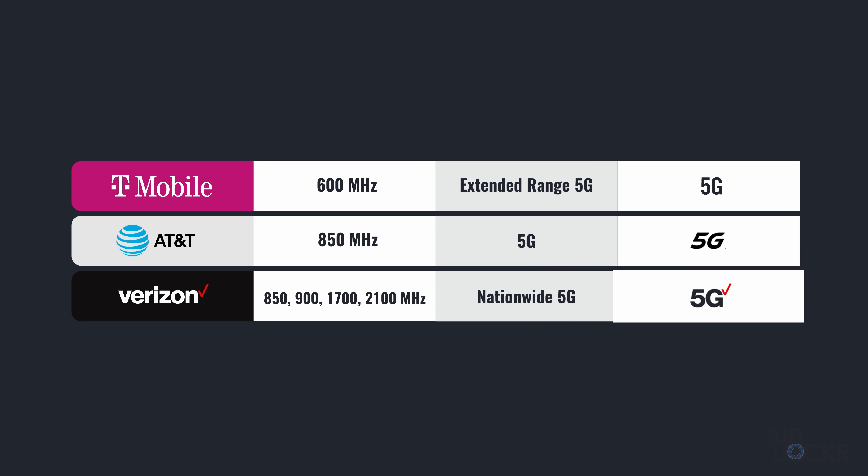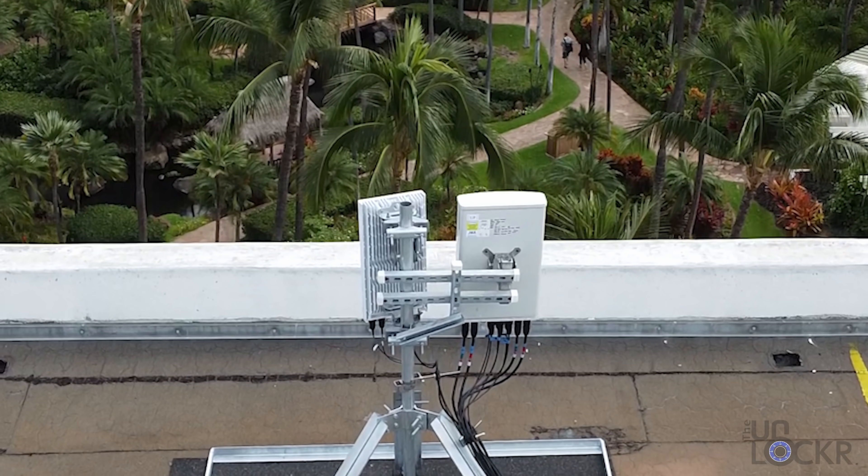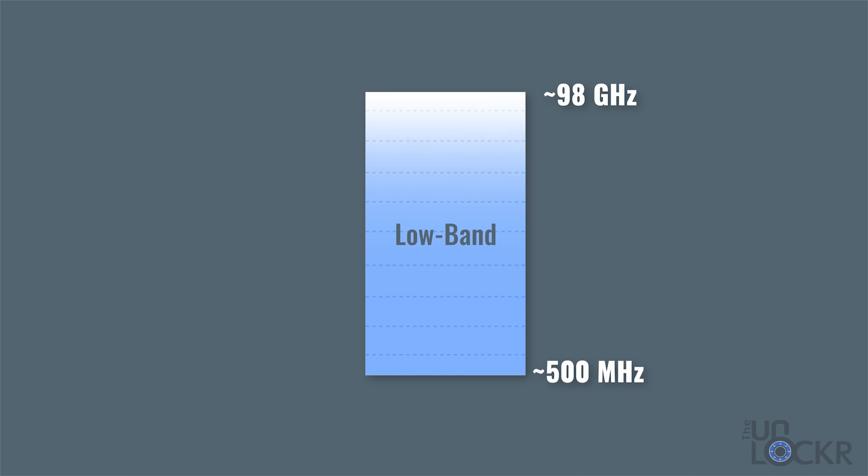Verizon calls this their nationwide 5G. Now 5G on these frequencies is going to be faster than LTE basically because of the inherent tech that 5G employs. The benefit to using these lower frequencies is that they just have a much longer range and they're better at penetrating objects like the walls of a building. The downside is that there's just not a lot of bandwidth, so there's not a lot of data that can be sent at a time — it's in that very crowded range of spectrum. All of the carriers basically will use their existing LTE frequencies for 5G eventually, the same way they used them for 3G and now for LTE.